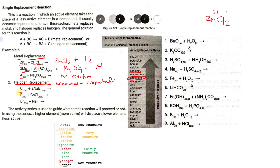We have Cl2, which is a non-metal, and sodium bromide. The non-metal in the compound is Br. Looking at the activity series, Cl is much more reactive compared to bromine. So Cl will replace Br in this compound. The products are NaCl plus Br. Since Br is a diatomic element, we have NaCl plus Br2.